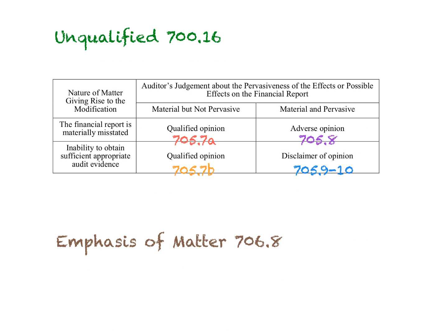We start with the unqualified opinion — the one that everybody wants. That's when we think everything is true and fair, free from material misstatement under ASA 700. This excerpt comes out of ASA 705 in the explanatory material. First we have to figure out: is the report misstated, or is there insufficient evidence? Then we look at two levels — material but not pervasive, and material and pervasive — giving us different types of opinions.